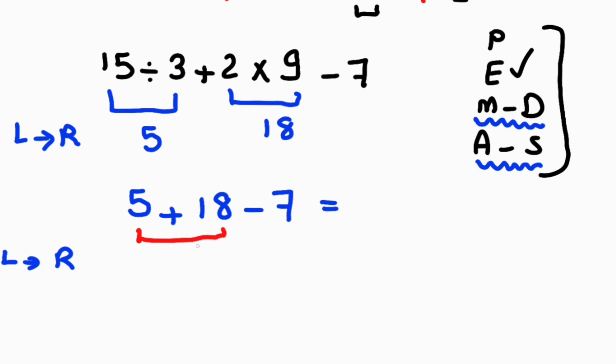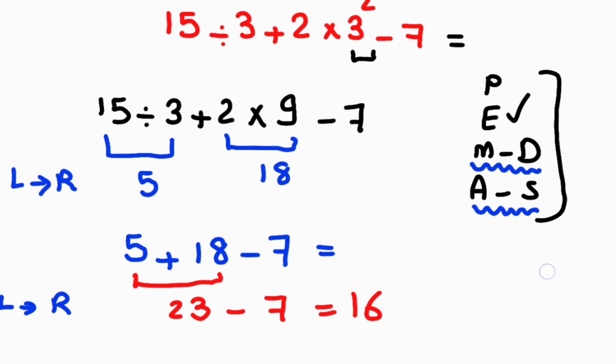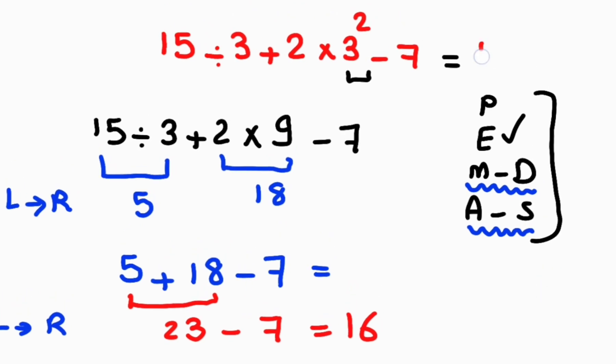5 plus 18 gives us 23, and 23 minus 7 equals 16. So the final answer is 16. Thank you for watching. Please like and subscribe if you like this video.